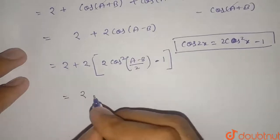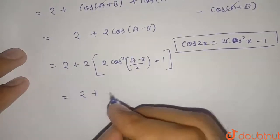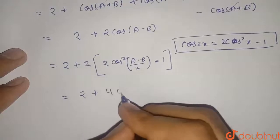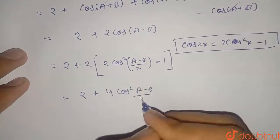Now if I multiply this 2 with this term and rewrite it, so it will be 2 + 4 cos²((A-B)/2) - 2.